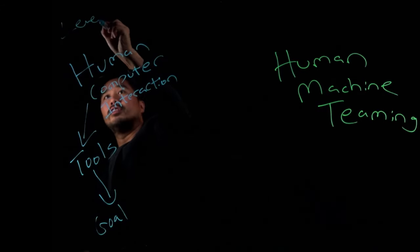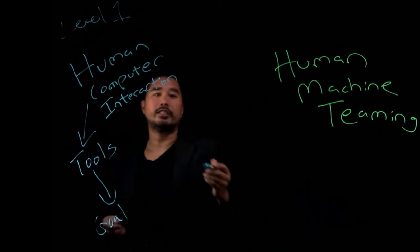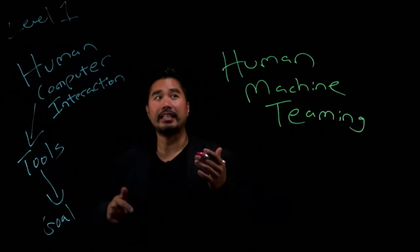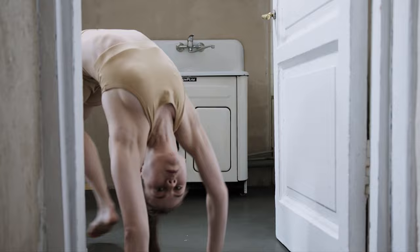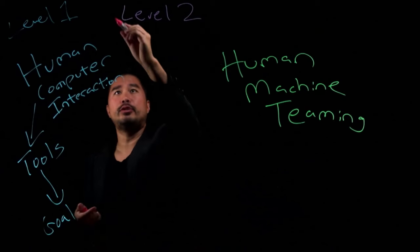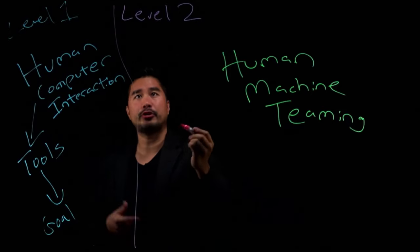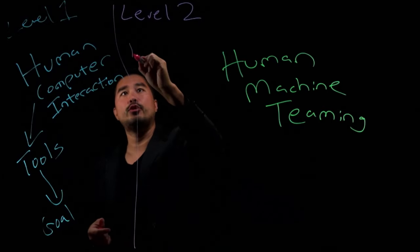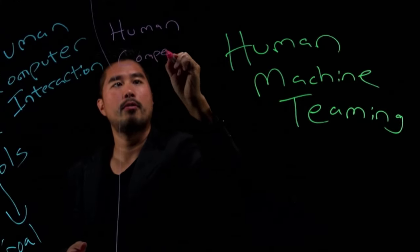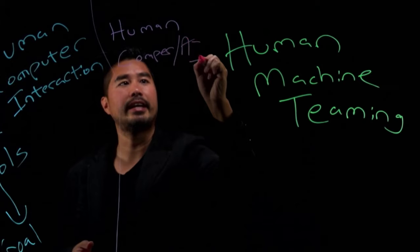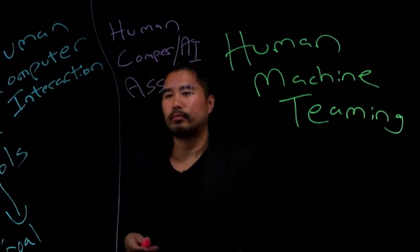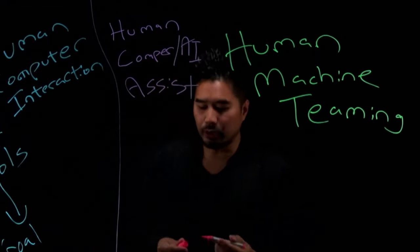Where we are now in society is this weird bridge period. I call this more a level two, in which we use machines, computers, AI, as human computer slash AI assistants. Like Alexa and all those other ones. Google and Siri.